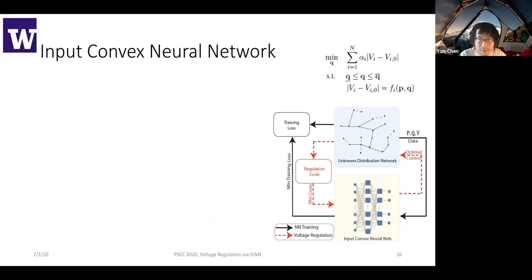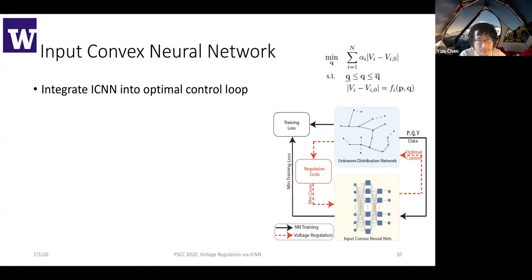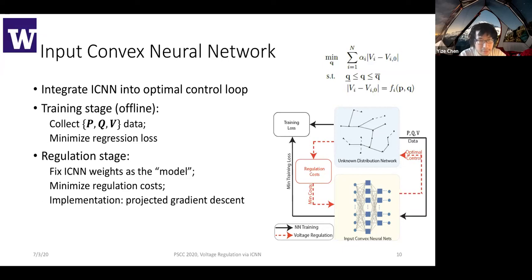This completes our story. During training, you are still training as a normal neural network, but the network structure itself is guaranteed to be a convex function. During control, we integrate the ICNN into the optimal control loop. After training, you fix the ICNN weights as a proxy model for your physical grids. You have a regulation goal of minimizing regulation costs, and by doing implementation, we just do projected gradient descent to make sure all the constraints are satisfied. Since the problem itself is convex, we can guarantee convergence to the optimal solution.